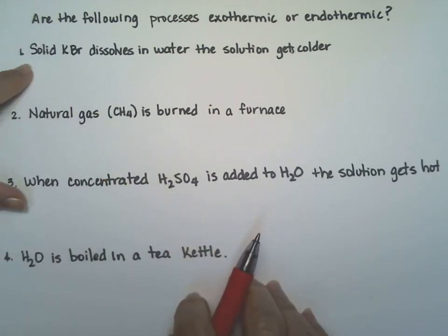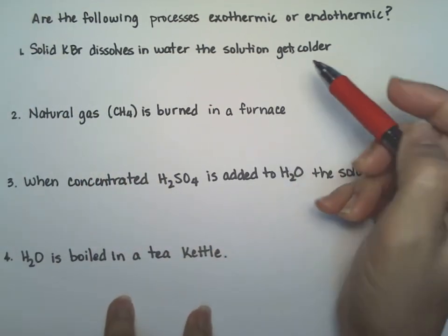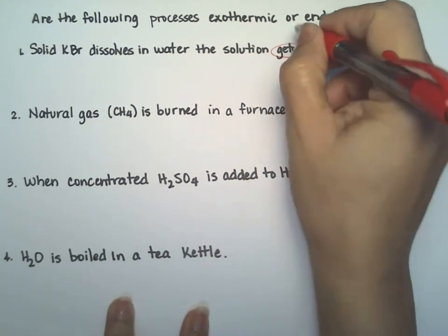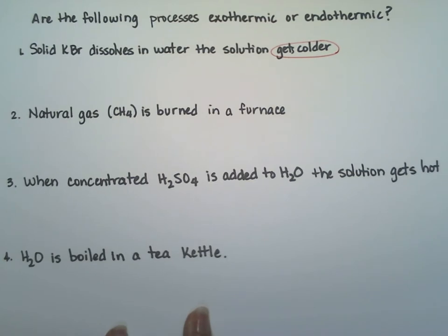So the first one right here, solid potassium bromide dissolves in water and the solution gets colder. That's important because it's telling you that heat is being absorbed by the water and that's why it's getting colder.